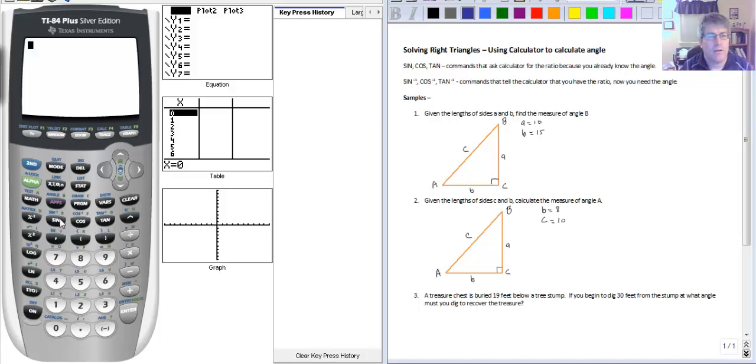So you may have noticed on your calculator above the sine, cosine, and tangent keys you'll see this sine to the negative 1, cosine to the negative 1, tangent to the negative 1. Well that's not the reciprocal of sine, cosine, and tangent. That's not the cosecant, secant, cotangent keys. That's called the arc sine and the arc cosine and the arc tangent.